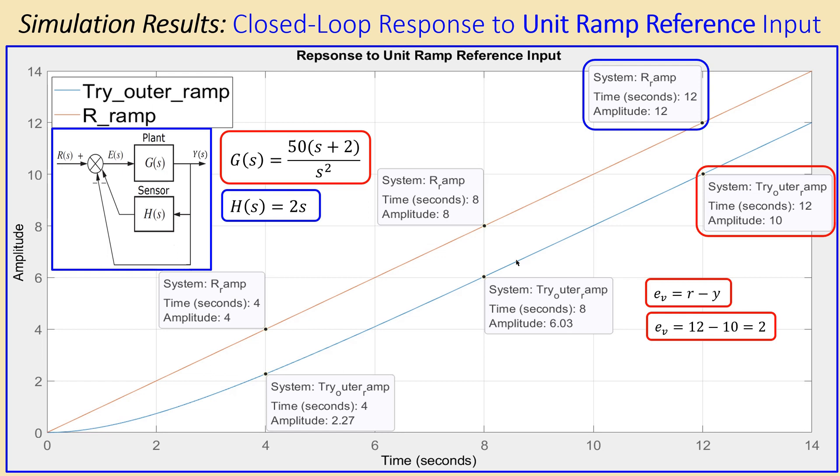So this is then 12 minus 10 is 2, and we have calculated that it was indeed the case. So we need to have an error of 2, and the value of K we have calculated was actually 2. So that will also give you an error of 2 in your unit ramp response.